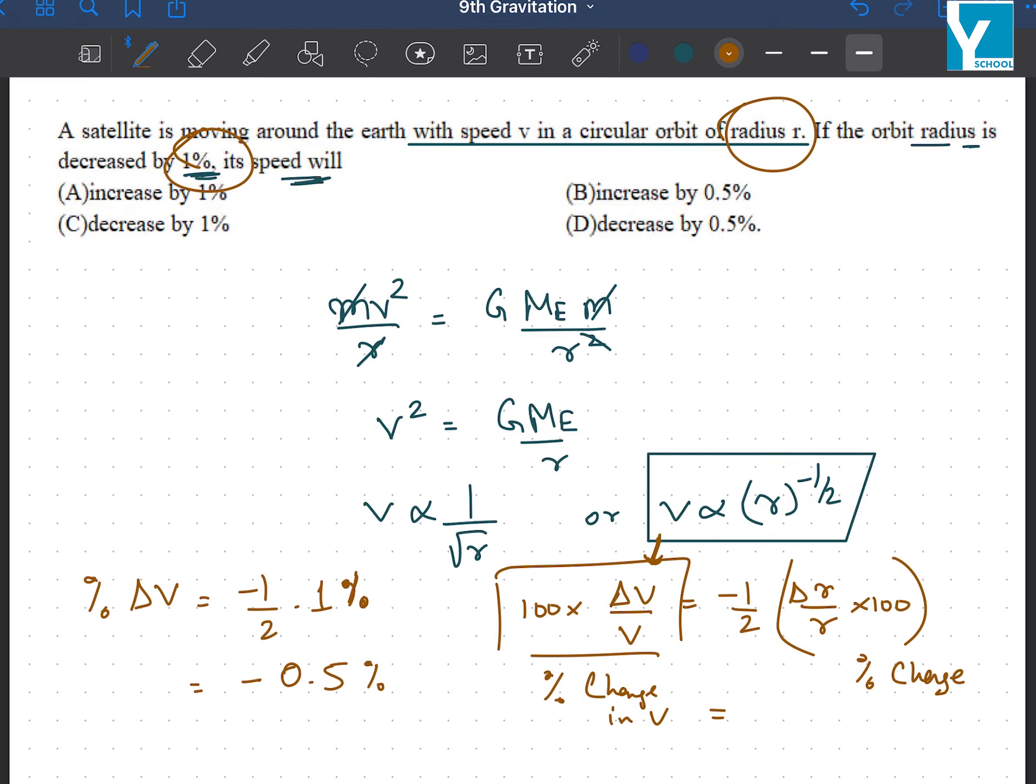if the radius is already decreased, we should write the percentage change as negative, minus 1%. So this negative cancels out and basically, if the radius is decreased, velocity will increase.